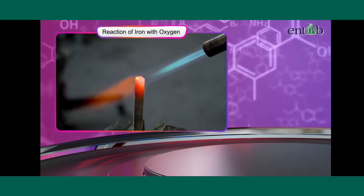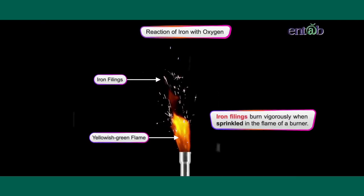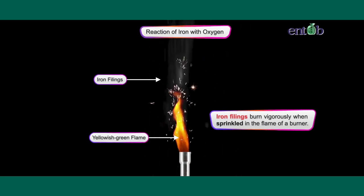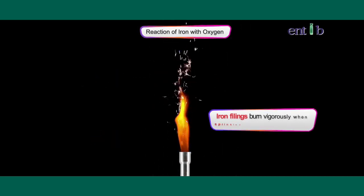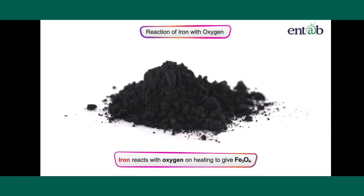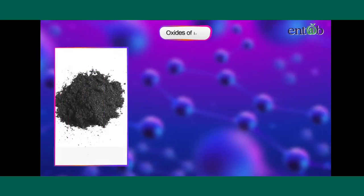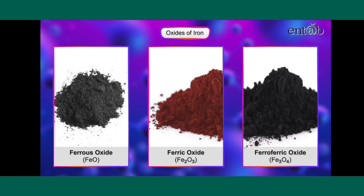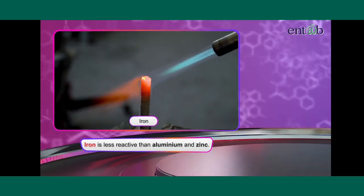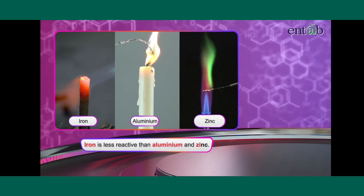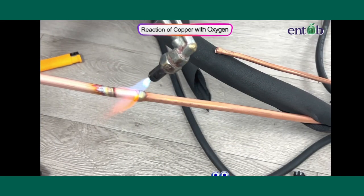Iron metal does not burn in air even on very strong heating, but iron filings burn vigorously when sprinkled in the flame of a burner. Iron reacts with oxygen on heating to give iron oxides. The three oxides of iron are ferrous oxide, ferric oxide, and ferrous-ferric oxide (Fe3O4). Iron is less reactive than aluminium and zinc.